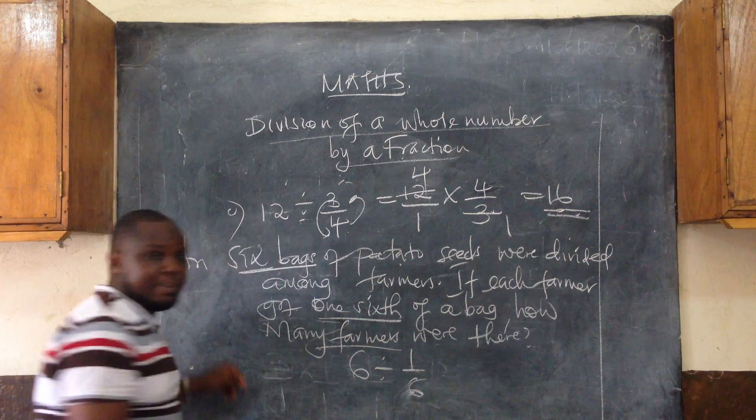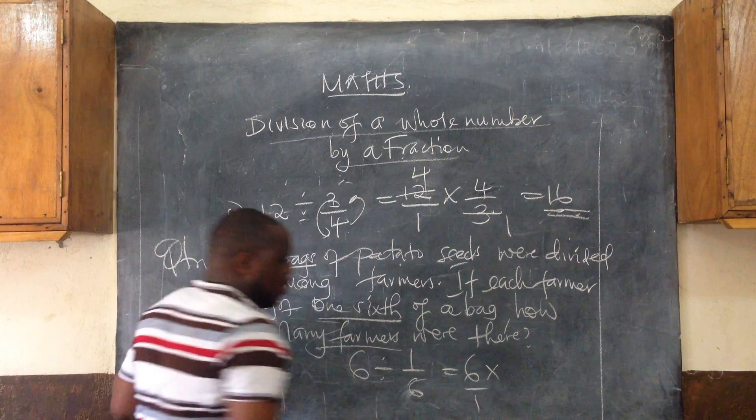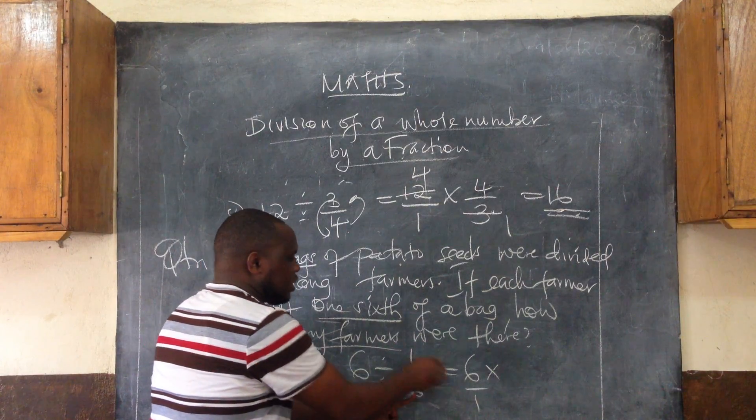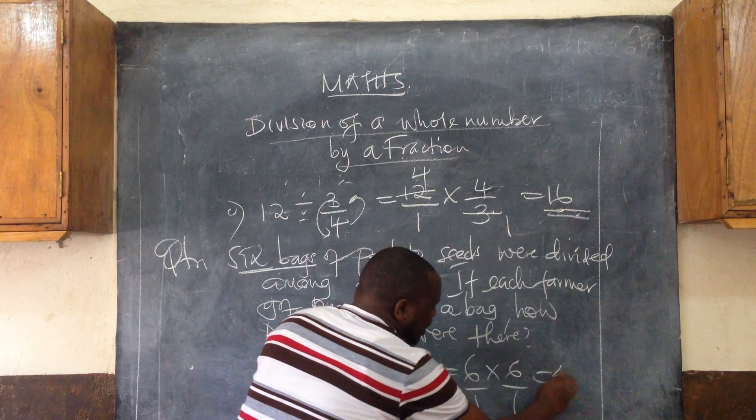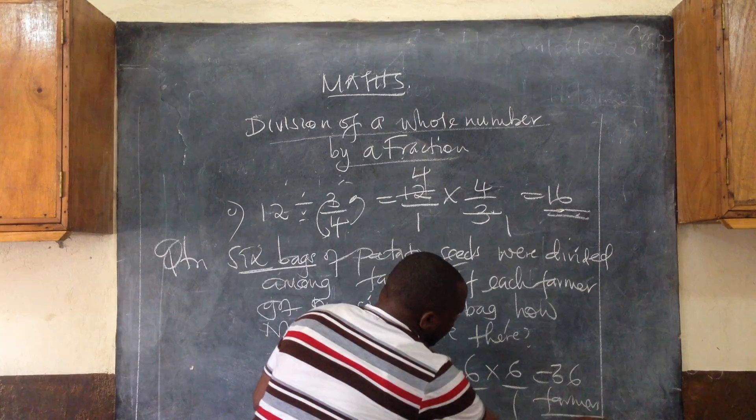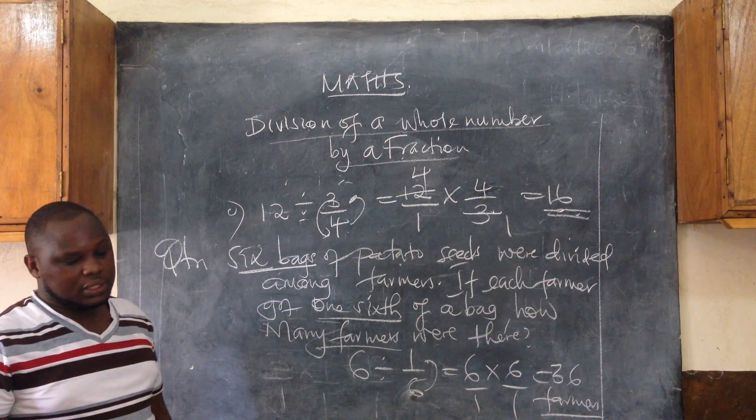This becomes 6 over 1, multiply by the reciprocal which is 6 over 1. You get 36 farmers. Those are the number of farmers that got the potato seeds. If you're given a question of that nature where you're dividing a whole number by a fraction, that's exactly what you do.